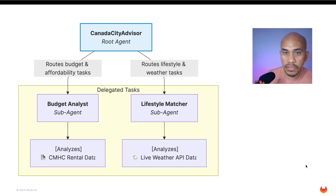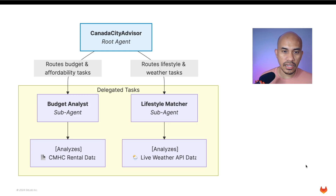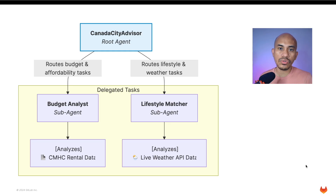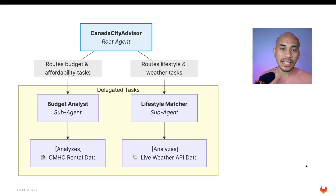Let me describe the application we'll be deploying today. It's called the Canada City Advisor, where a user will input their preferences regarding budget and lifestyle, and then our agent, the Canada City Advisor, will provide a recommendation. It uses two sub-agents: one analyzing the budget and the other analyzing lifestyle preferences. Once those two pieces of information are provided by the user, a recommendation will be generated.